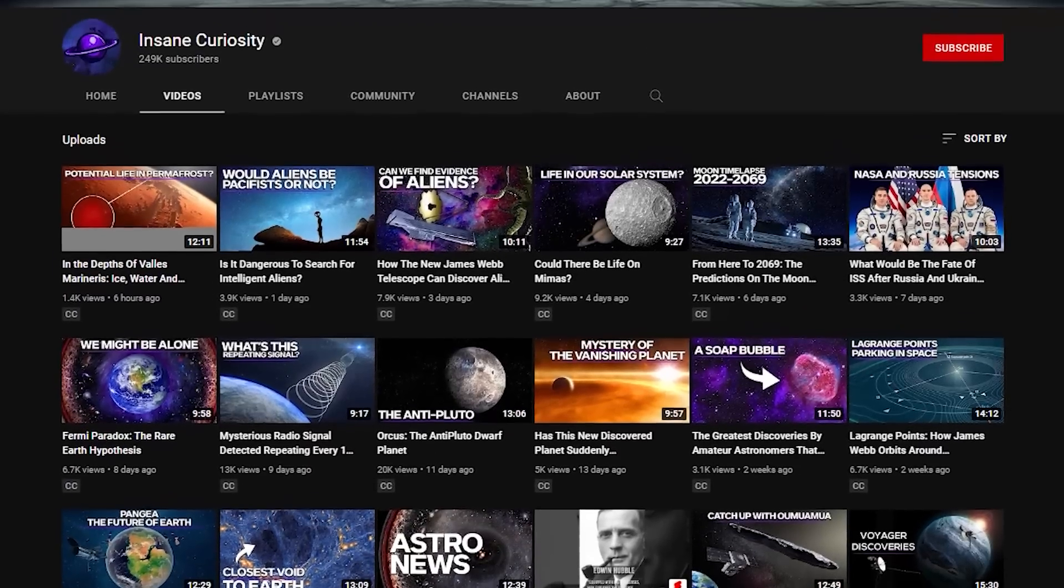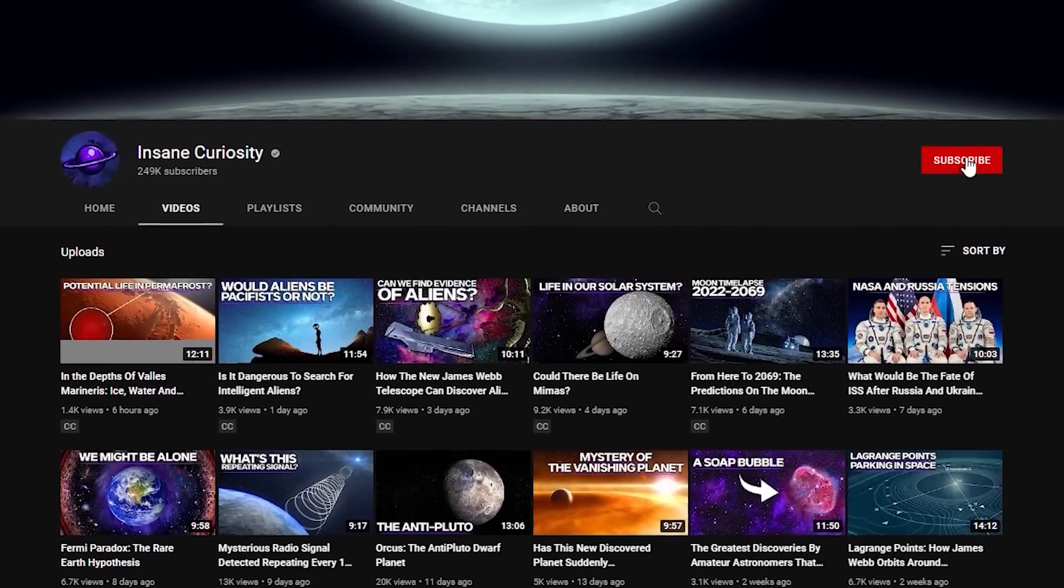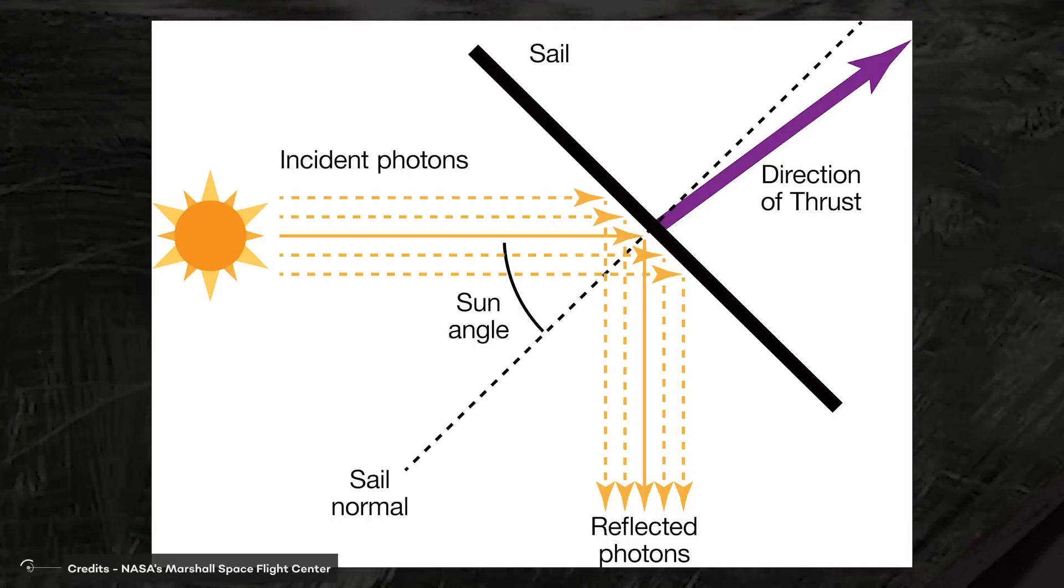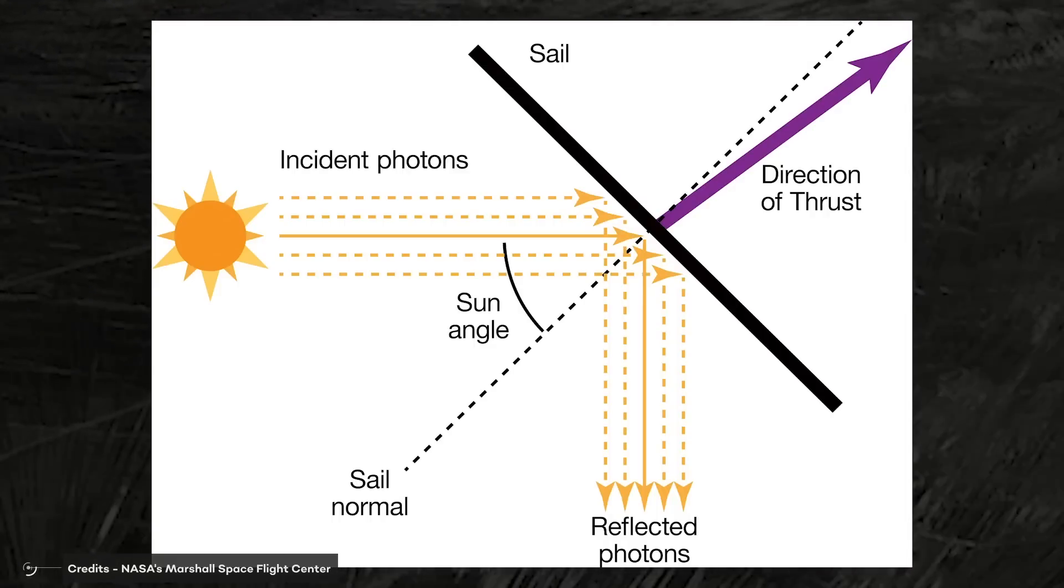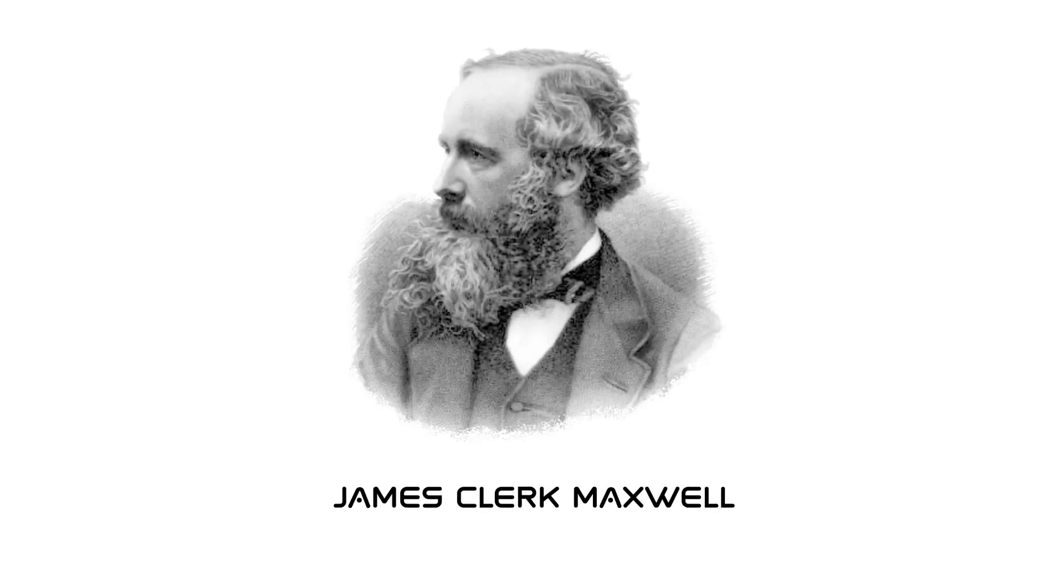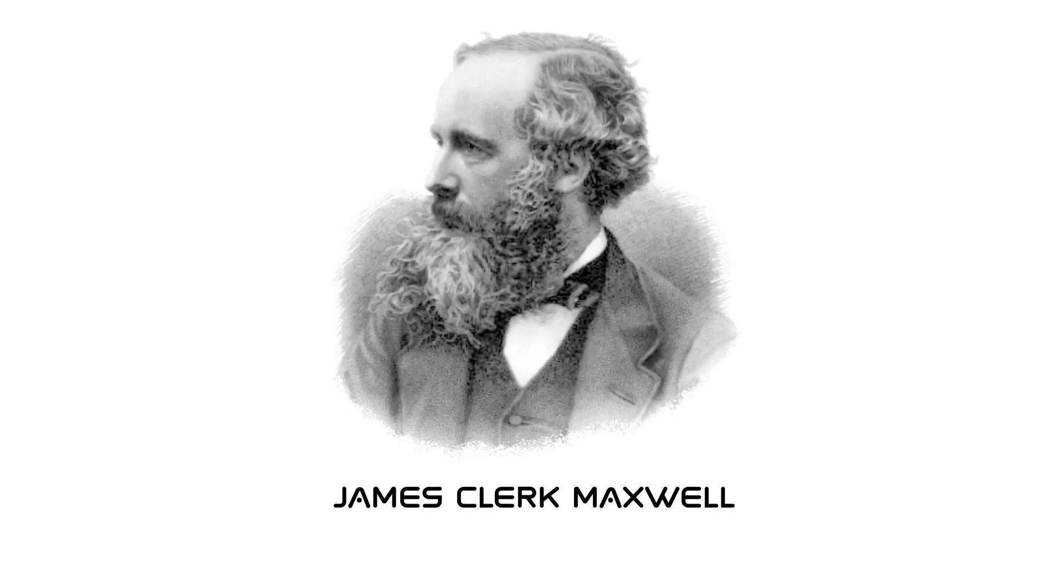That sunlight exerts a small amount of pressure as photons bounce off a reflective surface we knew since the early work of James Clerk Maxwell, but to be sure we needed some experiments.